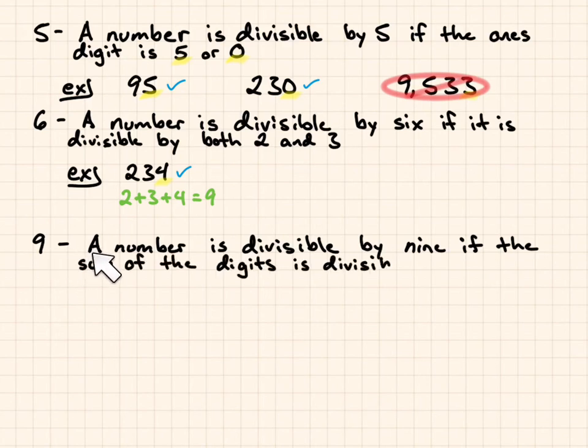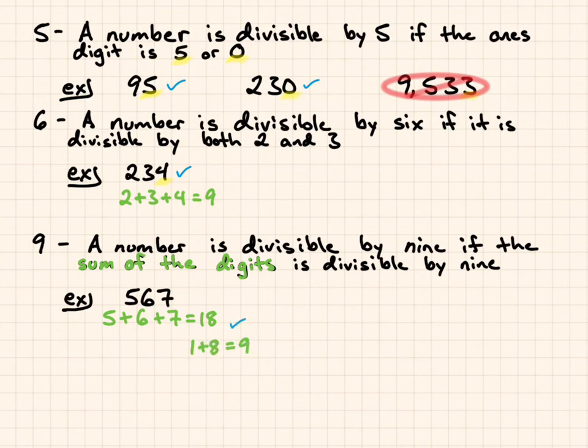Rule 9: A number is divisible by 9 if the sum of the digits is divisible by 9. Example, 567. I add the digits, so the sum of the digits is divisible by 9. 5 plus 6 plus 7 is 18, and 18 is divisible by 9, but if you want further proof, 1 plus 8 equals 9. And so that is also divisible by 9.